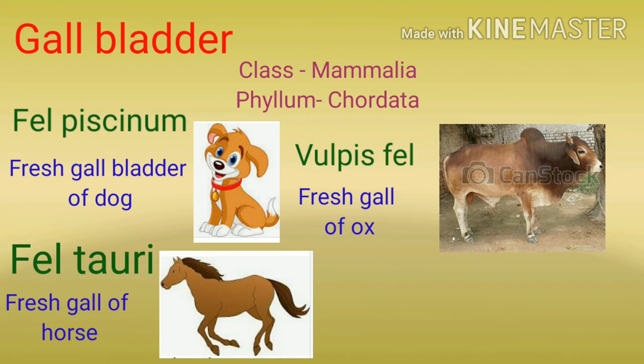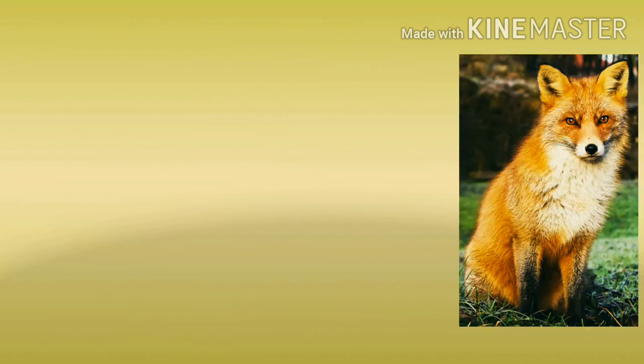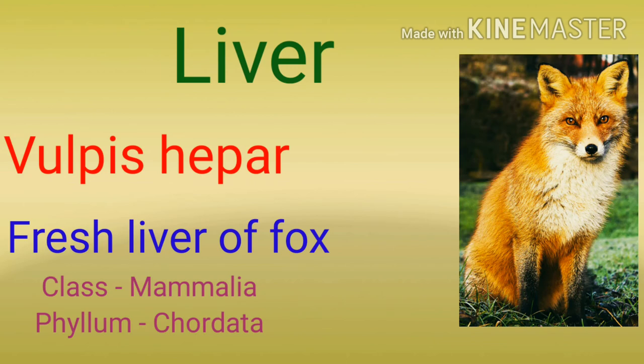अब हम बात करते हैं gall bladder से बनने वाली medicines की — class Mammalia, phylum Chordata। इसके तीन examples हैं। First one is Fel piscinum, that is fresh gall bladder of dog. Fel tauri is fresh gall of horse. And Vulpus fel is the fresh gall of ox. इसके साथ fresh liver of fox से बनने वाली medicine है Vulpus hepar, class Mammalia और phylum Chordata।